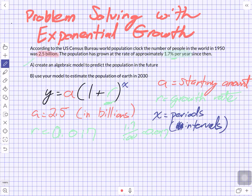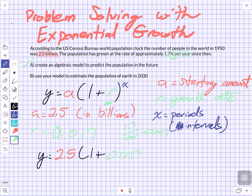So for part A, we've actually got all of our criteria. We can build our model relatively simply. Y is equal to a was 2.5, times 1 plus 0.017, and we can simplify that, to the power of x.